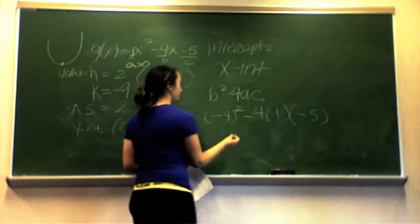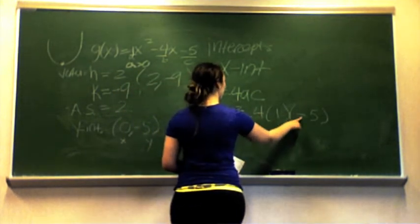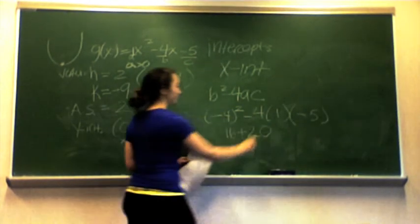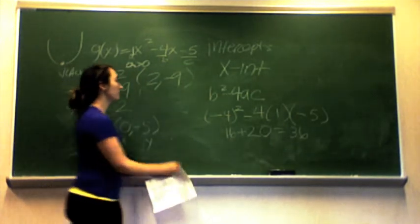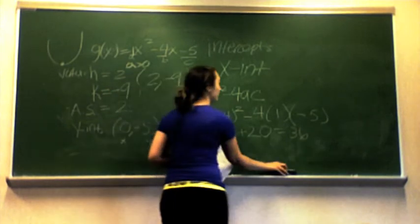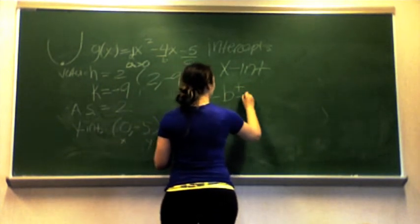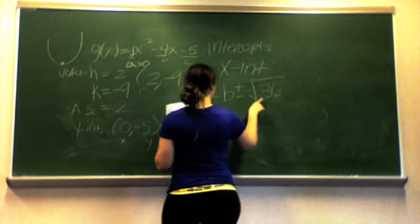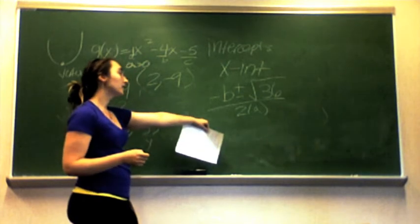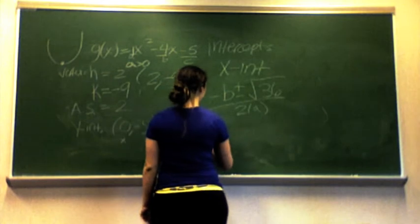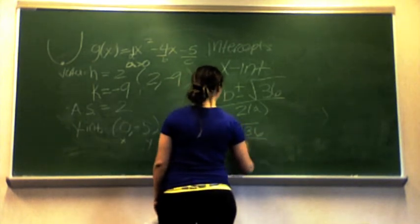So negative 4 squared — since squaring a negative gives a positive — is 16. Then negative 4 times 1 times negative 5 is positive 20. So 16 plus 20 is 36. Now we know our discriminant is 36. Going back to the quadratic formula, we have negative b plus or minus the square root of 36, all over 2a. We plug in b = −4 and a = 1, giving us: negative(−4) plus or minus square root of 36, all over 2.